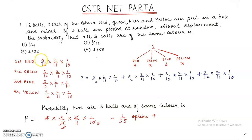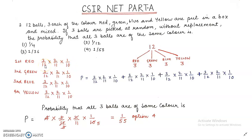How? Because initially total red balls are 3; after picking the first red, 2 remain. Total balls were 12; after picking one, 11 remain. After picking the second red, 1 red remains out of 10 total balls. So the probability that all three balls are red is 3/12 × 2/11 × 1/10. The same calculation applies for green: 3/12 × 2/11 × 1/10. If three balls are blue: 3/12 × 2/11 × 1/10. If three balls are yellow: 3/12 × 2/11 × 1/10.